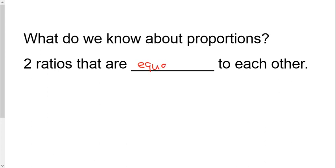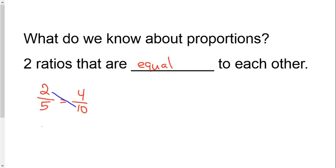And a quick review — I know that a ratio could be written like this. I know that 4 tenths would be equivalent to 2 fifths. So together, these two ratios are equal to each other. How can we know for sure? We can cross multiply. So 2 times 10 is 20, and 5 times 4 is 20.